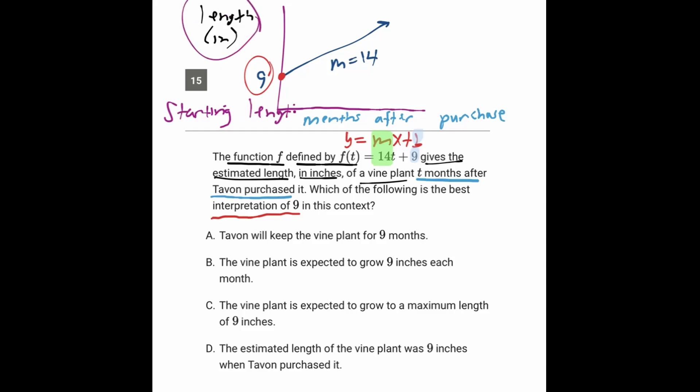So it's the starting length. And by starting, we mean zero months after purchase, because that's what you have right here, x or t is zero. So it's the starting length, right at the time of purchase, zero months after purchase.